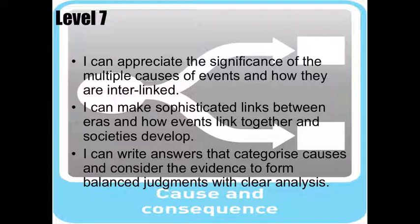At level seven, students appreciate the significance of the multiple causes of events and how they are possibly interlinked. So much more complicated causation being understood by students. Students can make sophisticated links between eras and how events link together and how societies develop. Students can write answers that categorize causes and consider the evidence to form a balanced judgment with clear analysis. Again linking back to the communicating about the past skill.